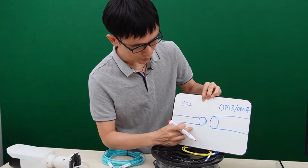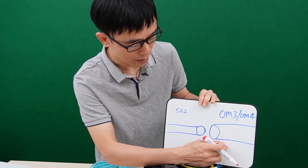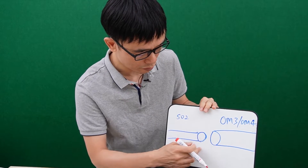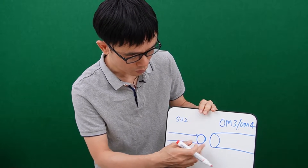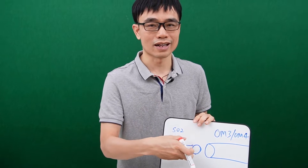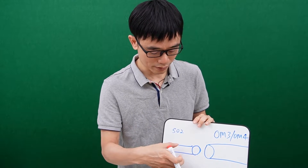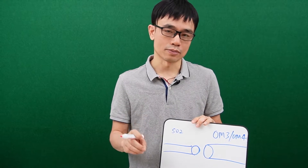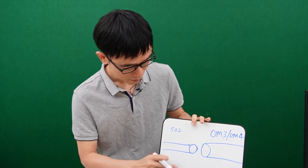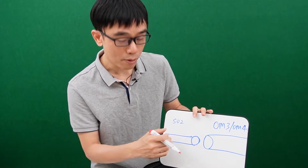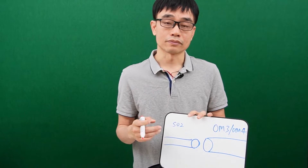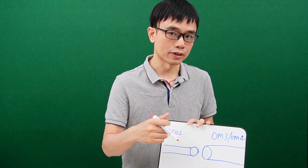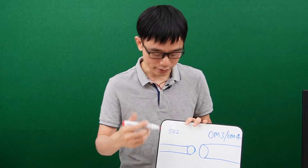Let's say this is the single-mode fiber optic cable and this will be the multi-mode fiber optic cable — OM3, OM4. Of course, the real cable will not be as large as this drawing. The fiber optic cable is just as small as a hair. In the fiber optic cable system, the light travels through this fiber optic cable and there is a shooting angle.